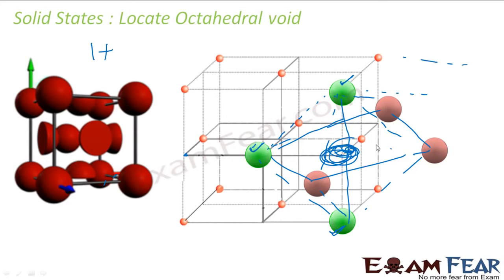One cell exactly on the left, one exactly on the front of this, and one exactly on the front of this shell. So this particular void will be shared by four cells. One is from the cell we are talking about; these three are contributed by three different cells.